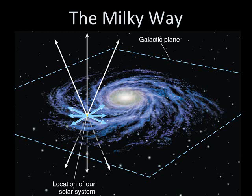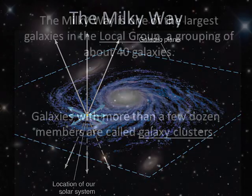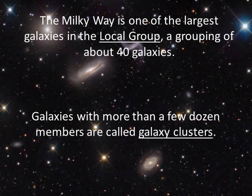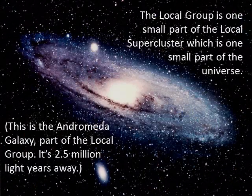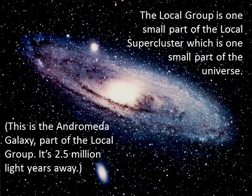Our sun is located about two-thirds of the way out in the disk in one of the spiral arms. Billions of other galaxies are scattered throughout space — some are fairly isolated, but many are found in groups. Our Milky Way is one of the two largest galaxies among about 40 galaxies in the local group. Groups of galaxies with more than a few dozen members are known as galaxy clusters. The local group is one small part of the local supercluster of galaxies, which is one small part of the universe.